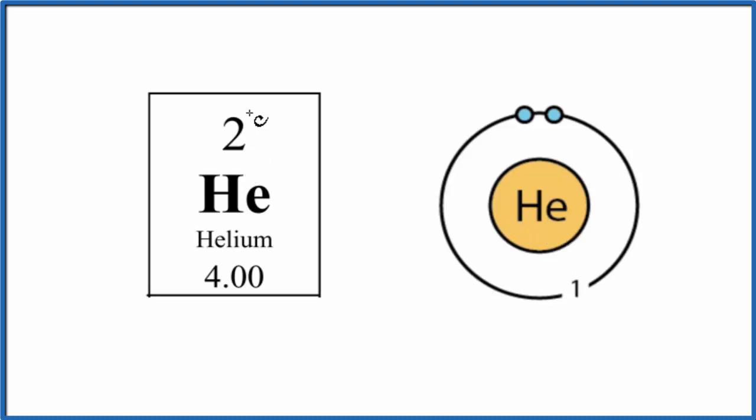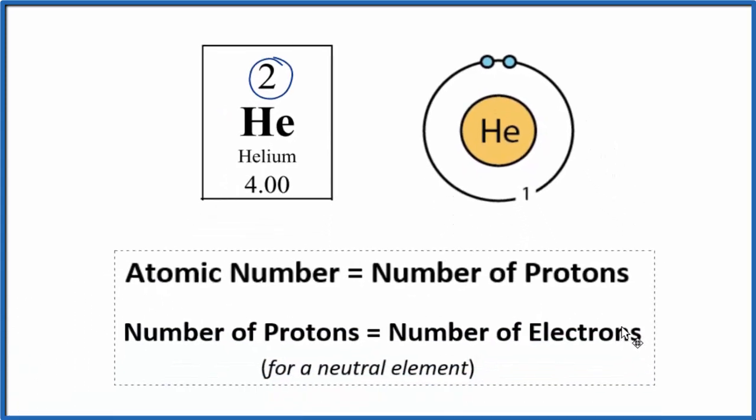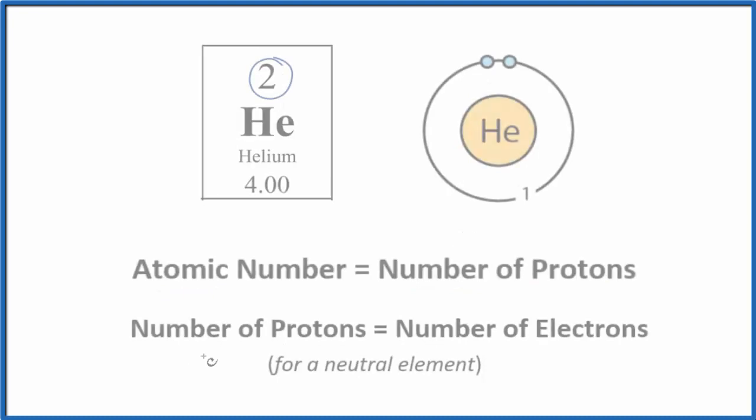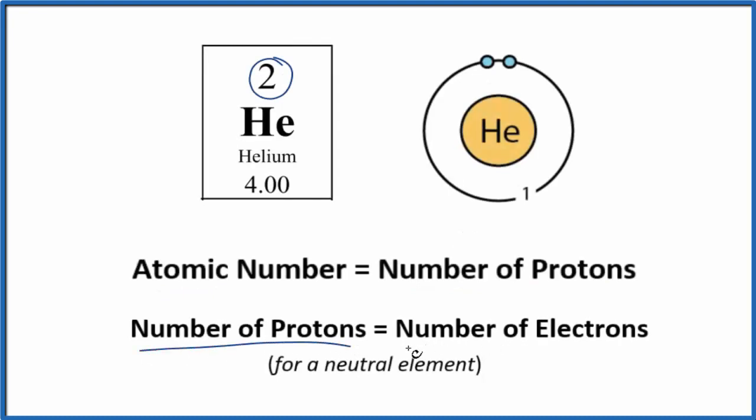Helium on the periodic table is atomic number two. What that means is that helium has two protons, because the atomic number equals the number of protons. Helium has two protons in the nucleus of the helium atom. The number of protons equals the number of electrons for a neutral element, and helium is neutral. All the elements listed on the periodic table are listed as neutral.